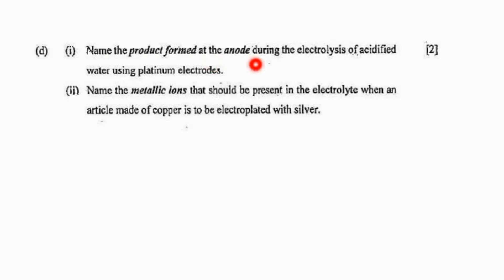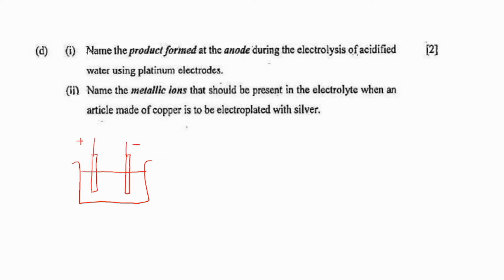Name the product formed at the anode during the electrolysis of acidified water using platinum electrode. Which is the electrolyte? Acidified water. As it is water, H⁺ ion will be present and OH⁻ ion will be present as the anion. As we are adding a few drops of concentrated H₂SO₄ to acidify the water, from H₂SO₄, H⁺ ion will be present and a few SO₄²⁻ ions will also be present.